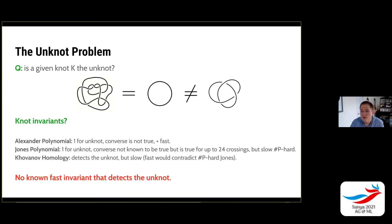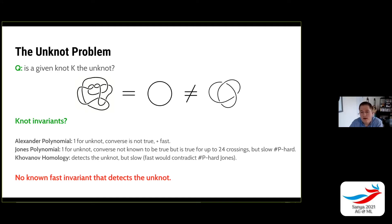Unfortunately, the Jones polynomial is #P-hard, a complexity class even harder than NP-hard. As the number of crossings goes up, you get exponential time complexity for computing the Jones polynomial. Similarly, Khovanov homology does detect the unknot, but it's also slow — if it were fast, it would contradict the #P-hardness of the Jones polynomial, which can be obtained from Khovanov homology. The punchline is that there's no fast knot invariant that detects the unknot.